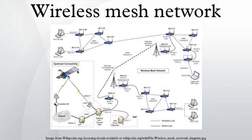A mesh network is reliable and offers redundancy. When one node can no longer operate, the rest of the nodes can still communicate with each other, directly or through one or more intermediate nodes. Wireless mesh networks can self-form and self-heal. They can be implemented with various wireless technologies including 802.11, 802.15, 802.16, cellular technologies, or combinations of more than one type.